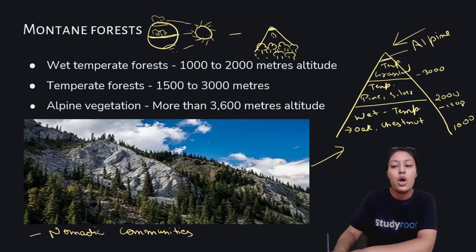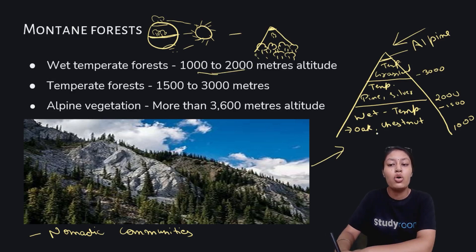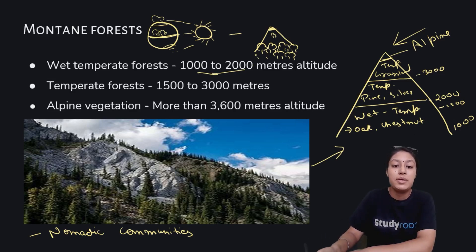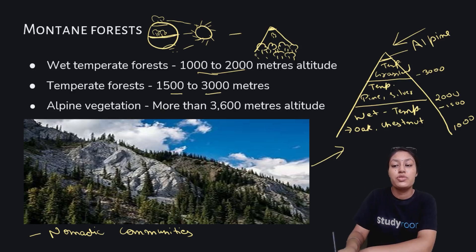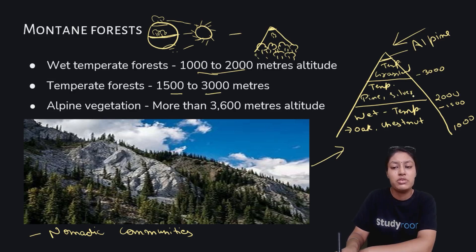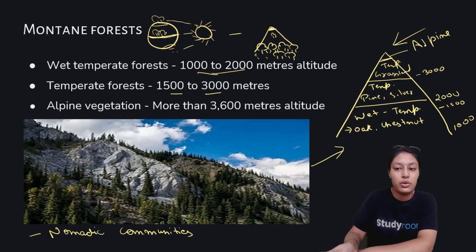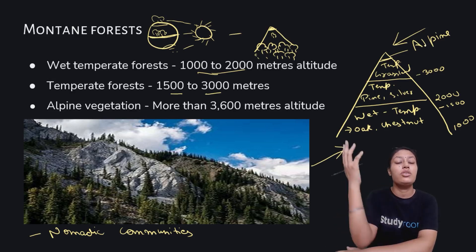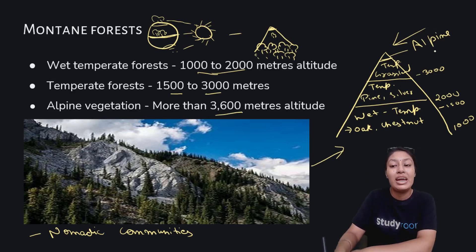Mountain forests have been segregated into zones. Wet temperate forests are between 1000 to 2000 meters, with trees like oak and chestnut that usually consume moisture. Temperate forests are found at approximately 1500 to 3000 meters with trees like pine, silver fir, and similar varieties. Above 3000 meters we see grasslands with barely any trees, and above 3600 meters there is alpine vegetation.